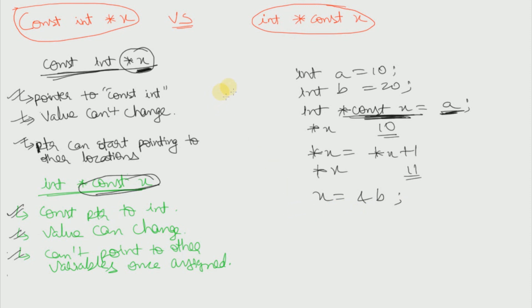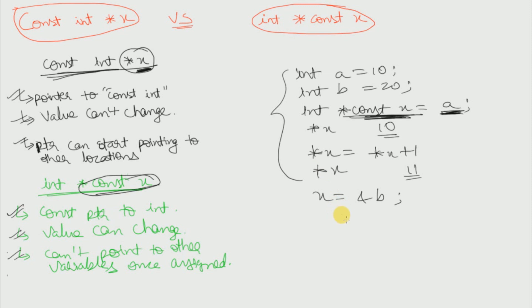So these are all the three cases and you must have understood the difference between `const int *x` and `int *const x`. The two main differences were: we can change the value in case of `int *const x` but we cannot change the value in the first case. In the second case, once we have assigned x to a variable we cannot change it, but in the first case we can change the variable it points to. Hope you liked this video — if you find it helpful, please hit the like button and subscribe for more such videos. Thank you.